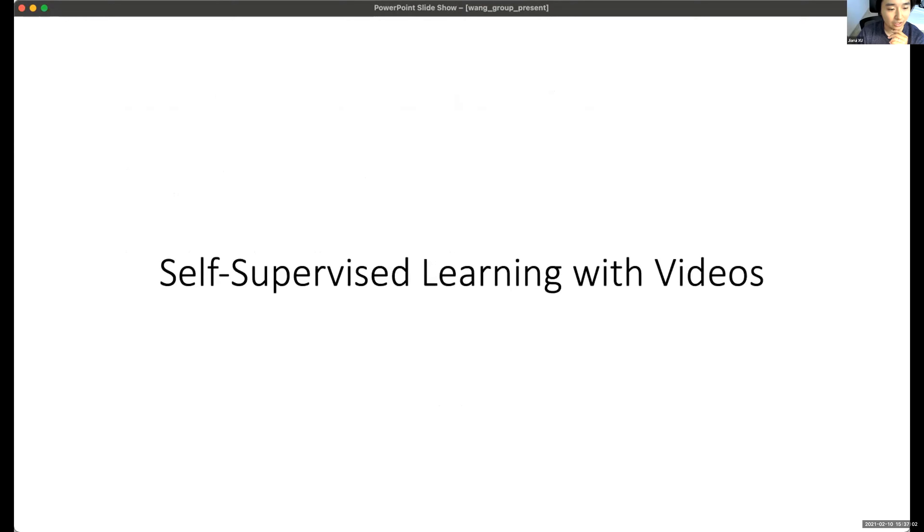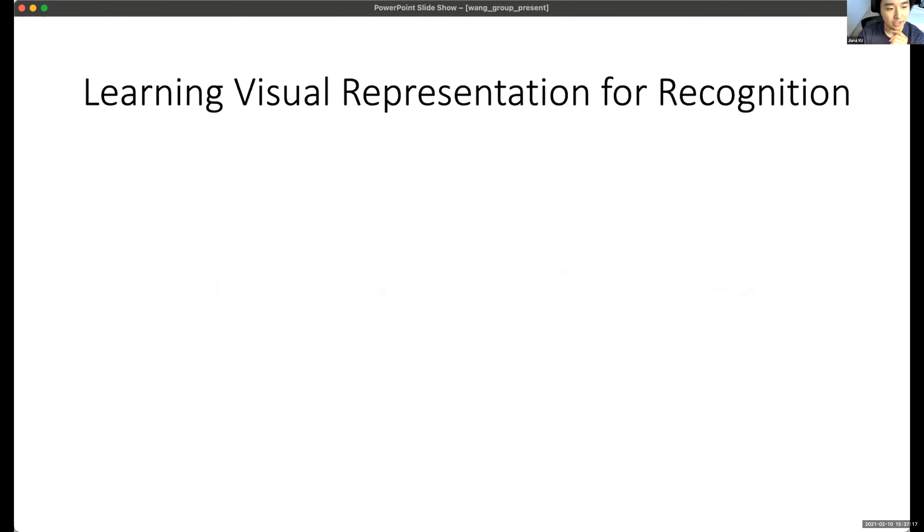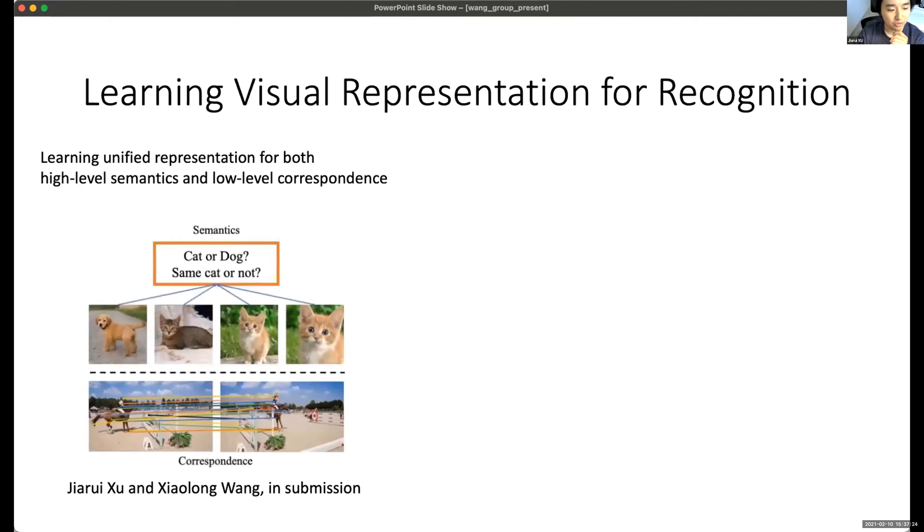The first one is self-supervised learning with videos. Video is a very natural data source in the real world, and many knowledge can be learned in a self-supervised manner from video. And we have some projects about learning visual representation for recognition. For example, this is with me and Xiaolong. Last year, we made a paper about learning a unified representation for both high-level semantics and low-level correspondence.